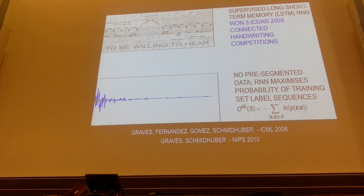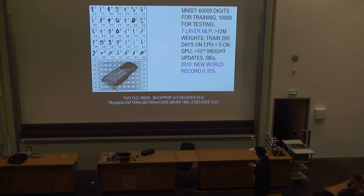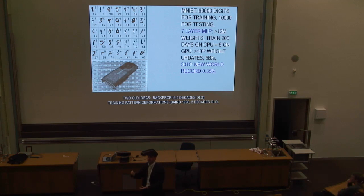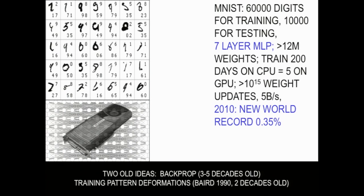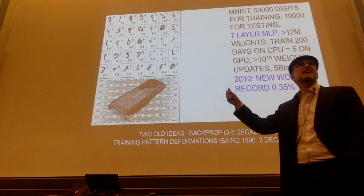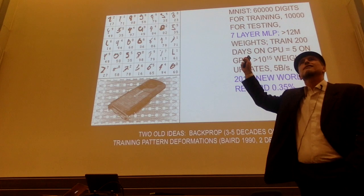Now through faster computers, we are really about to exploit this. We are also working on feed-forward neural networks, which are simpler — no recurrent connections — but for many computer vision tasks, they are just the right thing. This is an example of probably the most famous benchmark in machine learning, introduced in 1989 by Yann LeCun and his group, called the MNIST digit recognition benchmark.